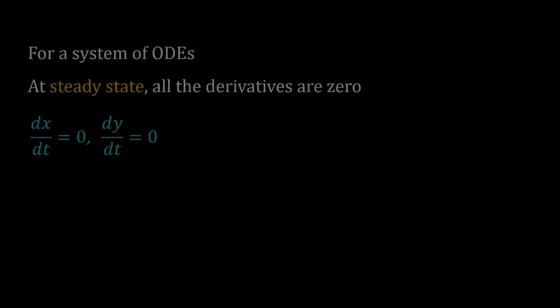For a one dimensional system, at the steady state, the dependent variable does not change with time. For a system of ODEs, all the dependent variables must stay constant at the steady state. That means, derivatives of all the dependent variables must be 0 at the steady state.